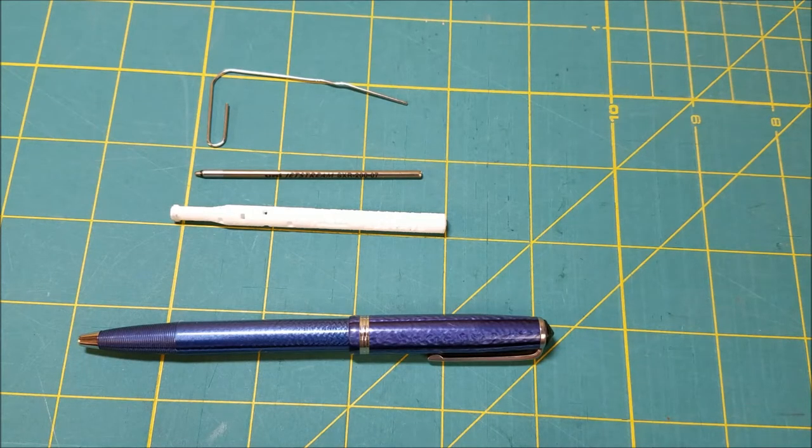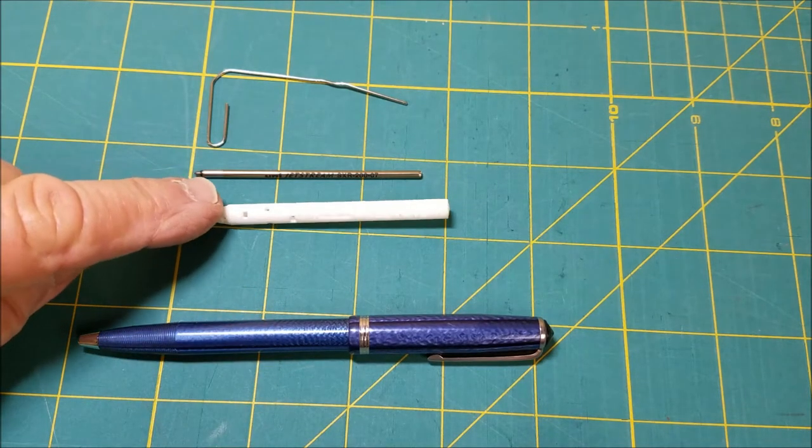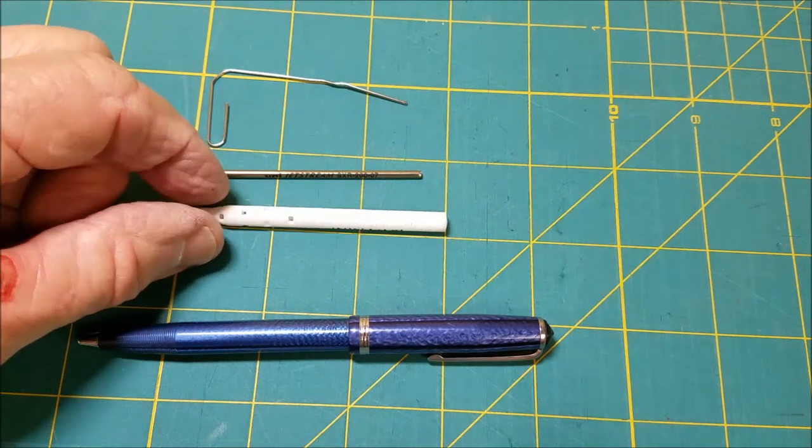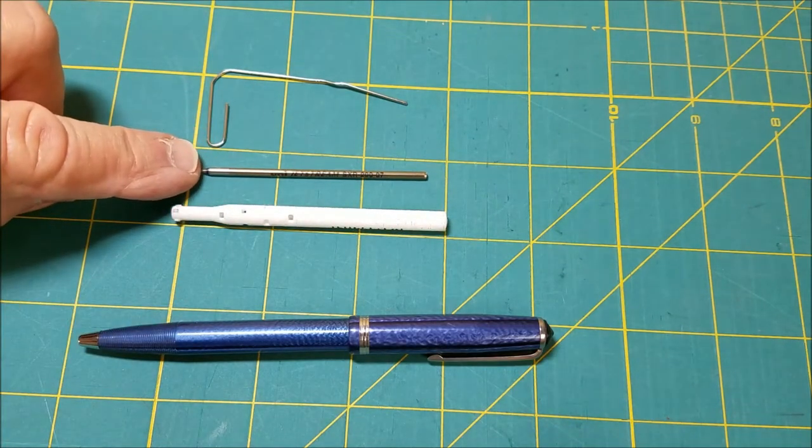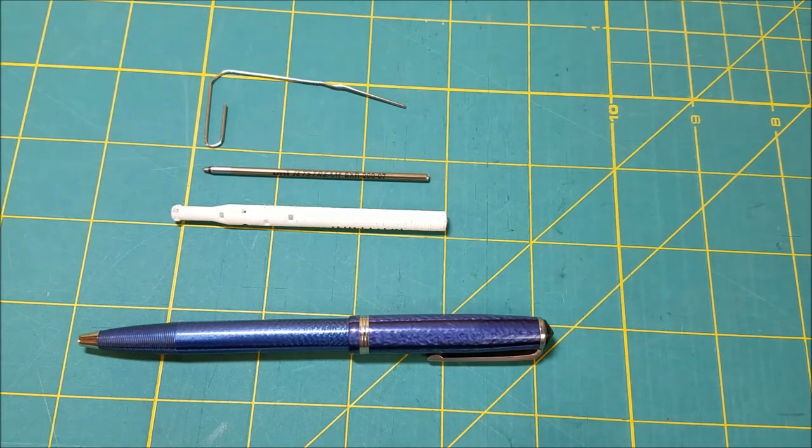One of the things you'll need in order to make your vintage Estabrook FJ ballpoint write again: the ballpoint itself, our Estabrook to D1 adapter, a D1 mini refill, and perhaps a paperclip straightened out.